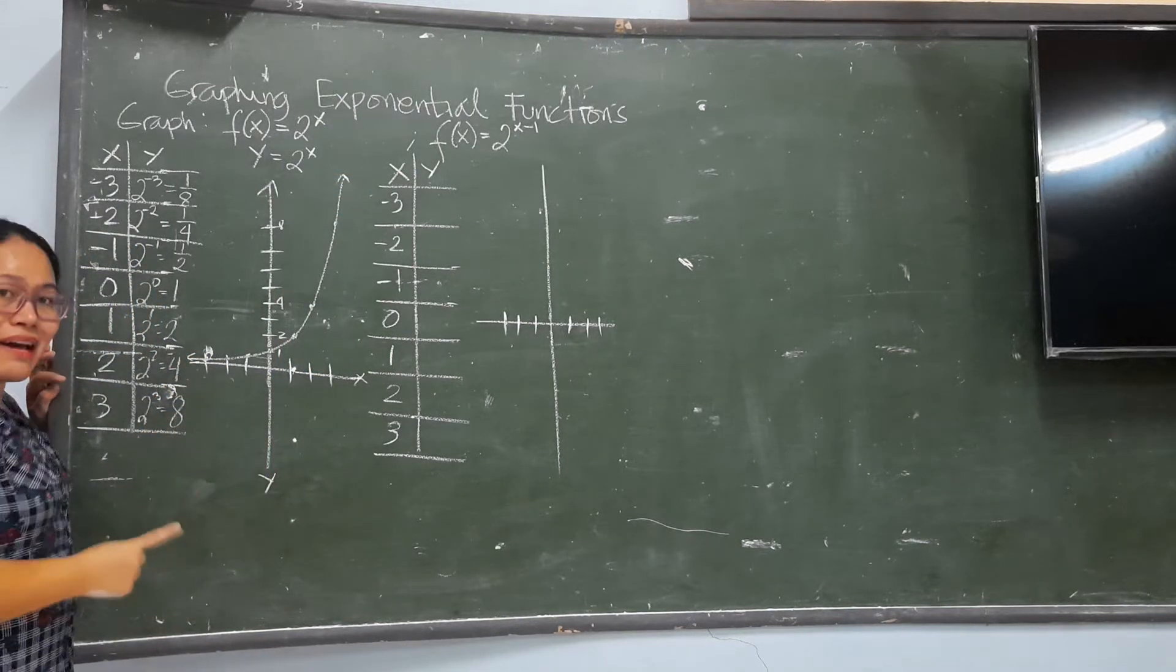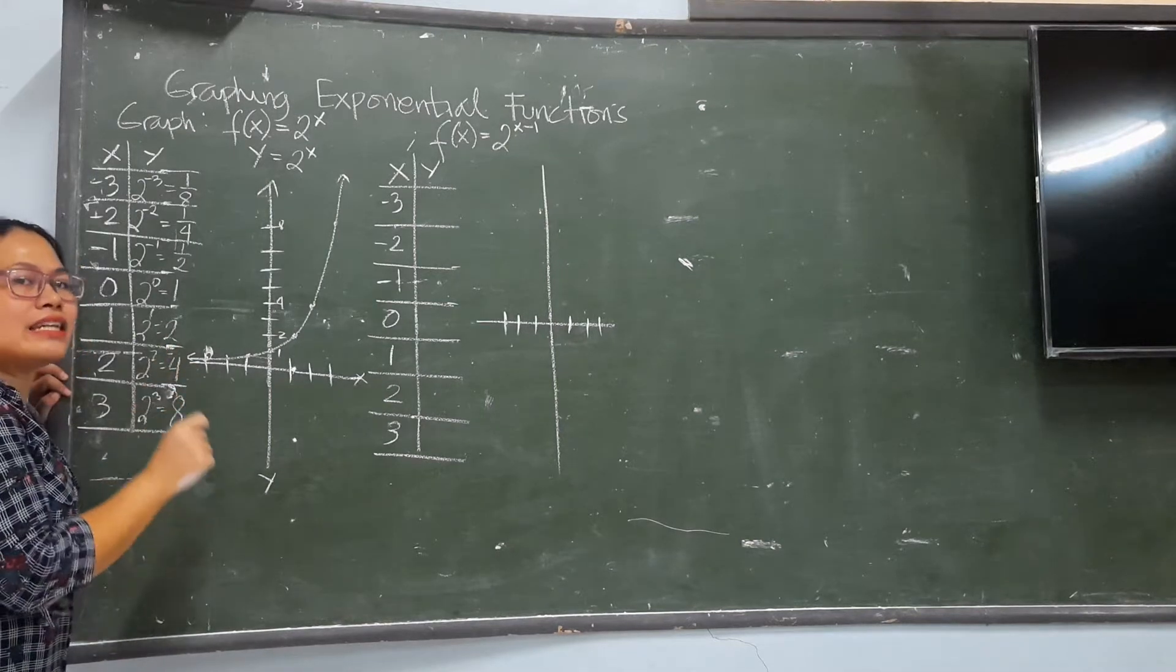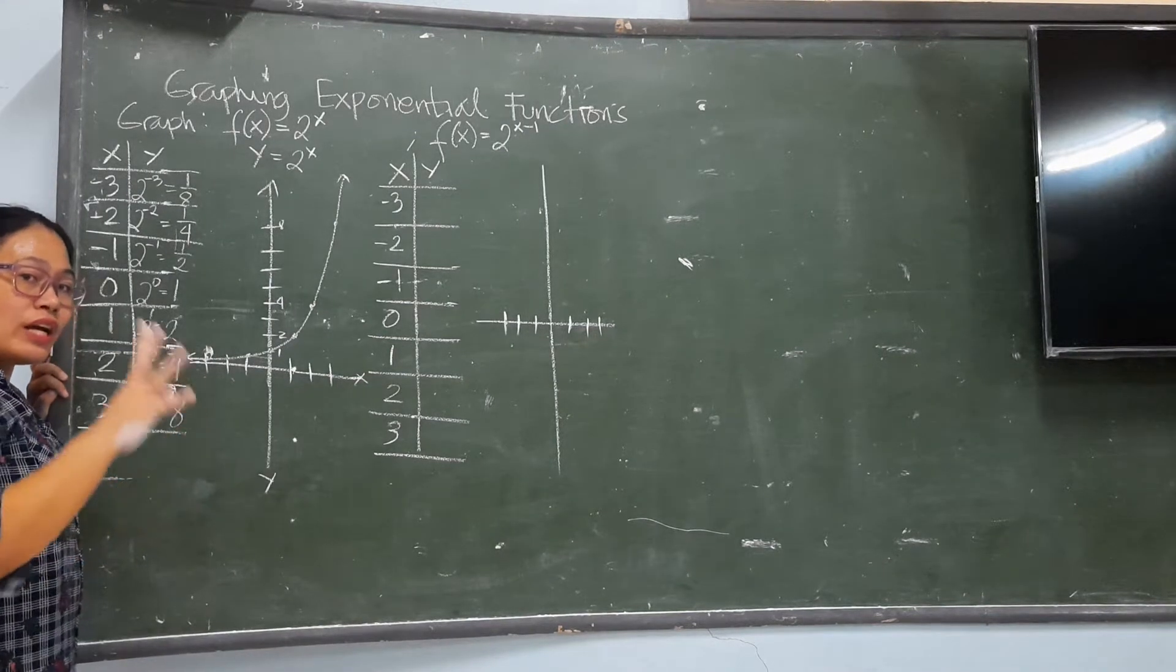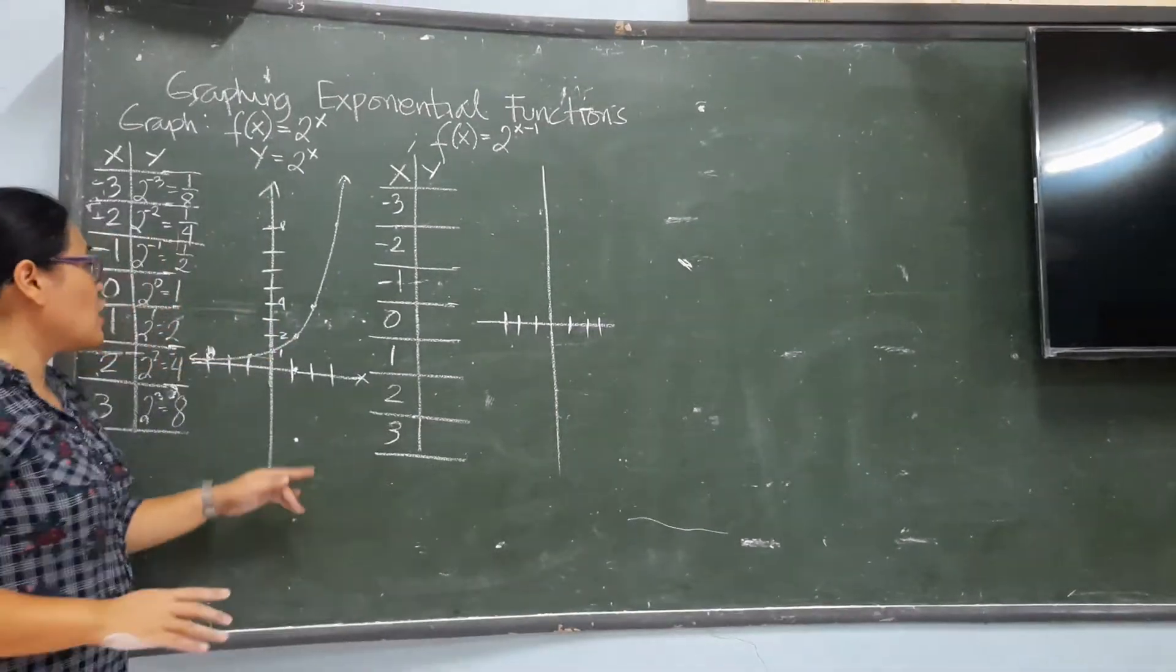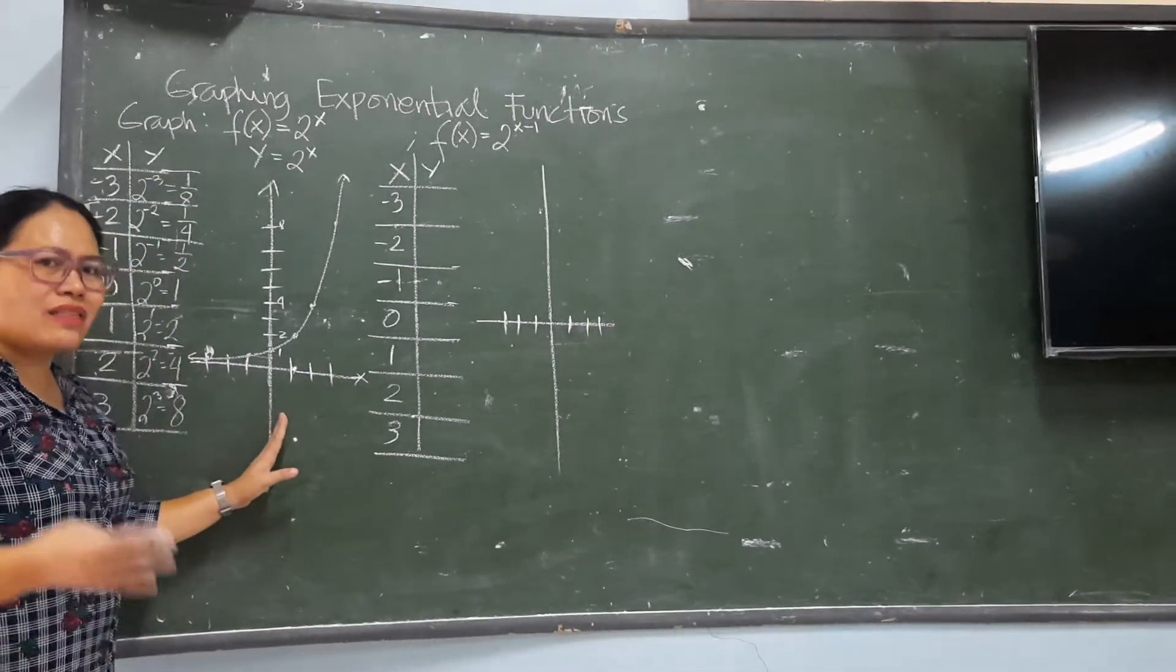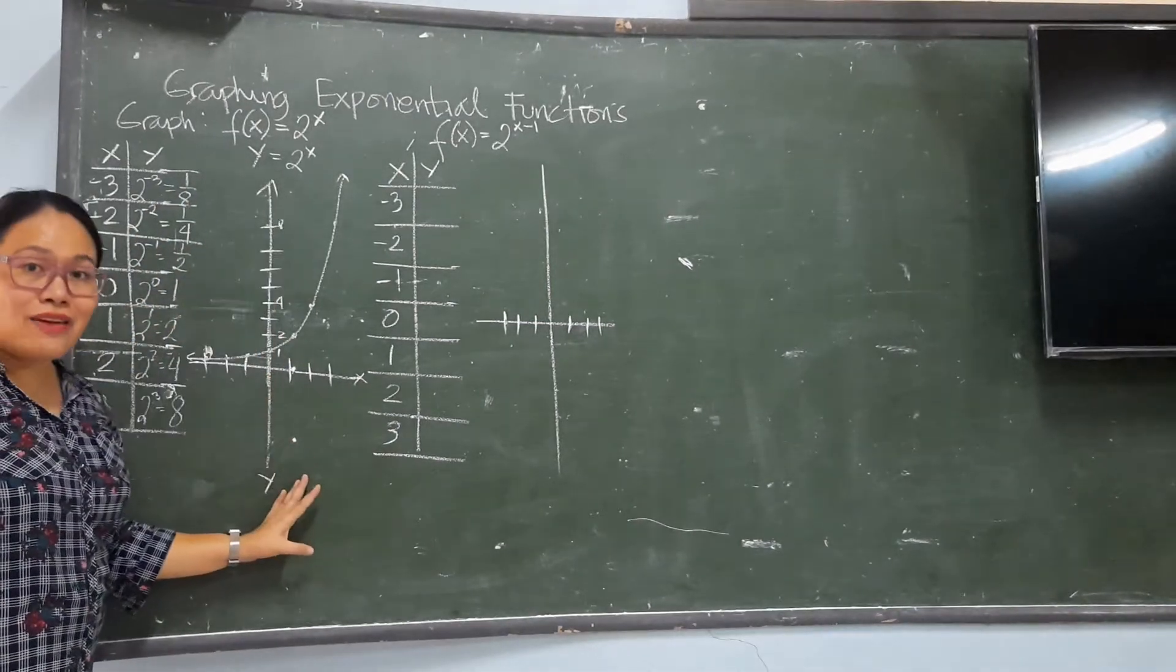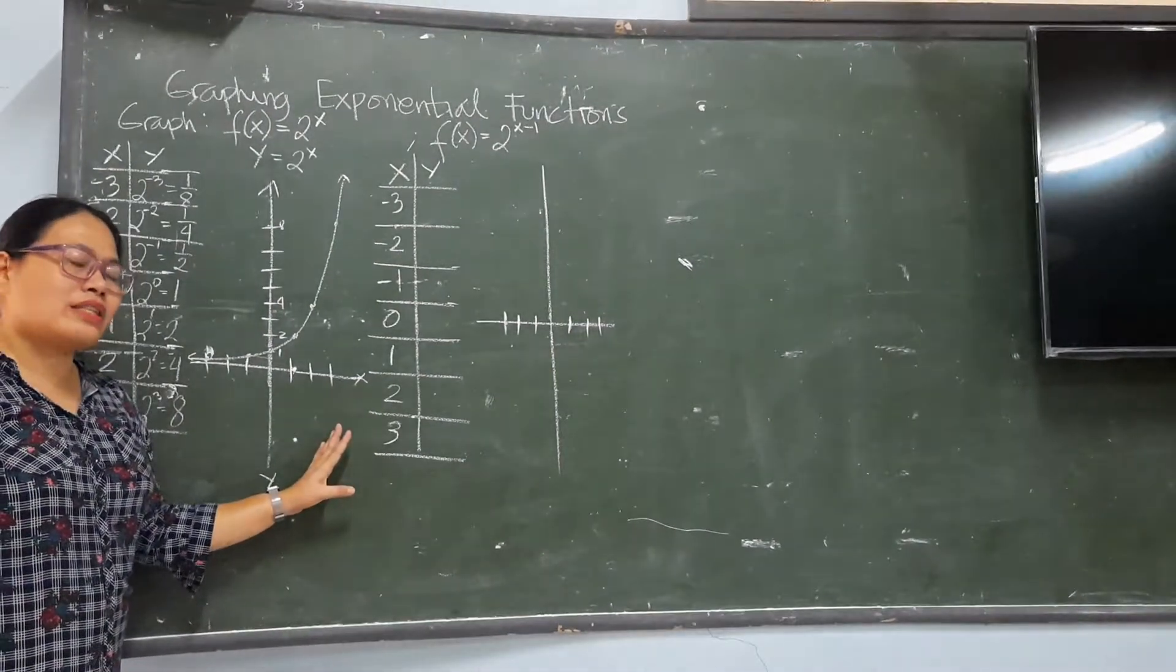Actually, it will never touch the X-axis. But, it will merely approach the X-axis. And, that is what you call an asymptote. You have learned that one before. It will merely approach, but never touch the axis. So, I only need these two. I don't need solution to get the values of the Y. Just answer it like that. And then, graph it. I think I have 4 numbers in this time in your activity.